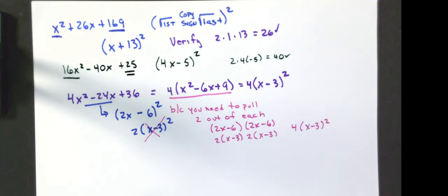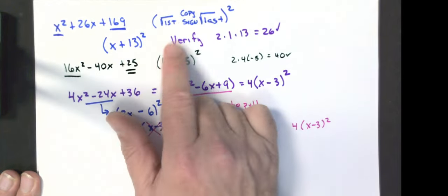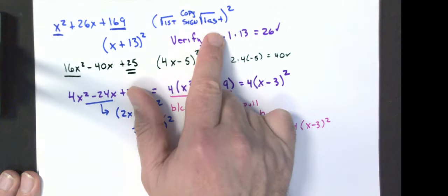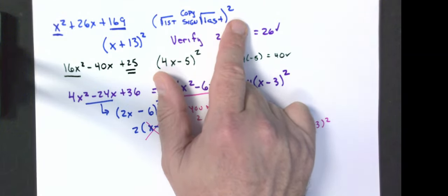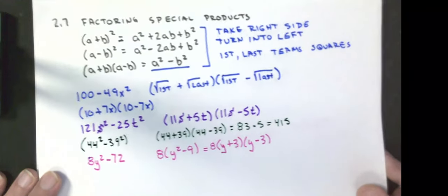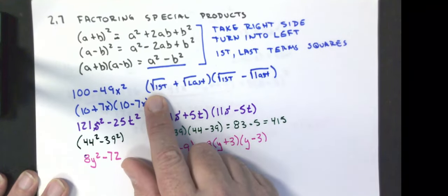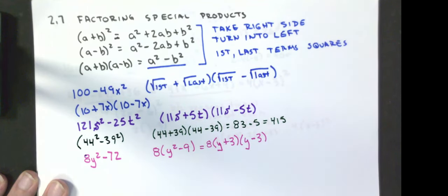This section is definitely easier than the previous two. Let me go back over the rules: if it's a perfect square trinomial, it's the square root of the first, square root of the last, copy the sign, all squared. If it's a difference of squares pattern, it's the square root of the first plus the square root of the last, times the square root of the first minus the square root of the last.